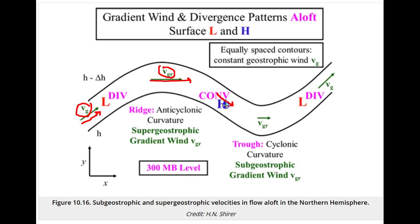As it goes through the trough around the low pressure aloft, it slows down to subgeostrophic, and then speeds up to geostrophic in the next straight section.